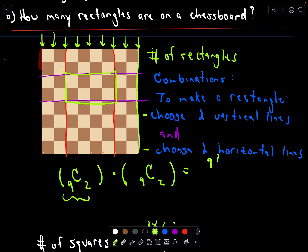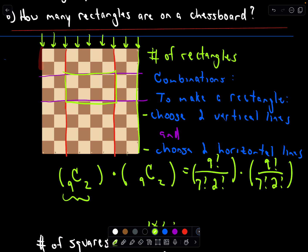Choosing two vertical lines from nine is nine choose two, which equals nine factorial over seven factorial times two factorial — that's 36. The same applies to horizontal lines: also 36. So the total number of rectangles is 36 times 36, which equals 1296. There are 1296 rectangles on a chessboard.